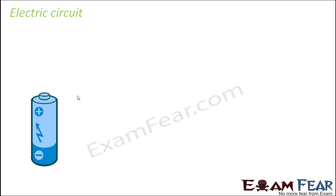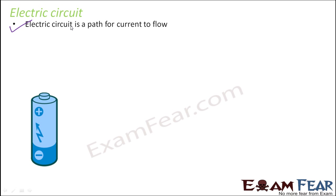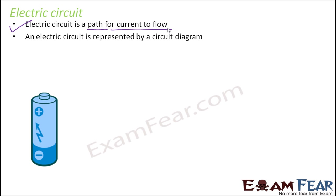Now let us talk about the electric circuit, since I am using that term quite often. An electric circuit is a path for current to flow. Only when there is a complete path will current be able to flow. So how do we represent an electric circuit in a diagram? We make use of circuit diagrams, where we use specific symbols to represent specific things.